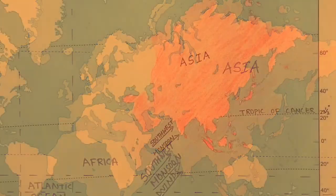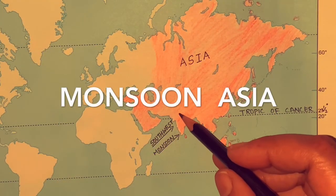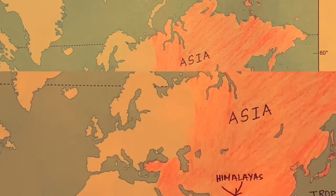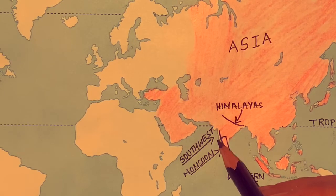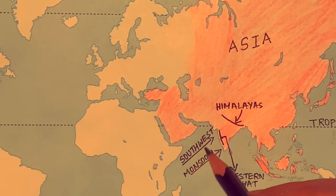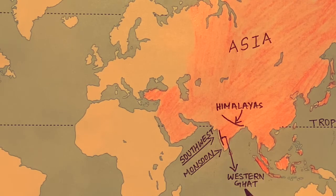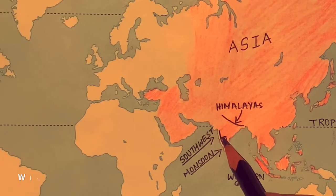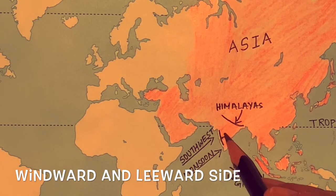The southwest monsoon winds bring rain to most parts of South and South East Asia. This region is also known as Monsoon Asia. After approaching the Indian landmass, the moisture-laden monsoon winds first encounter the Western Ghats.